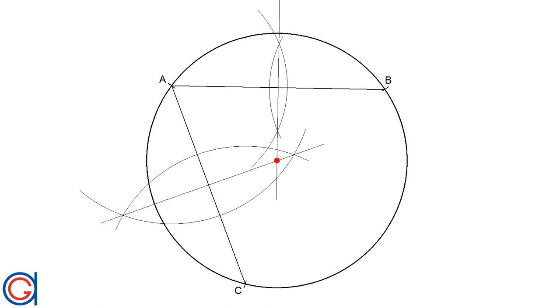Where the two perpendicular bisectors intersect, this is the center point, or the red point which we will call O, of the given circle.